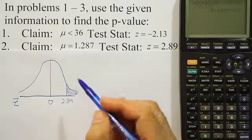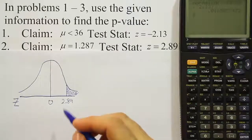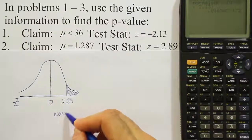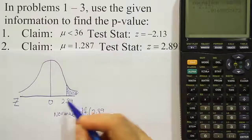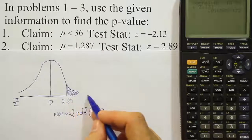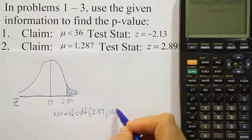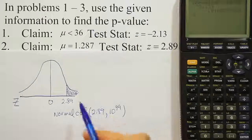So this would be the tail area. And we double it. So we're going to have to give our calculator again the normal CDF. But we're going to start at 2.89 this time. That's the start of the shaded region. And we're going to go up to infinity or 10 to the 99th power for the calculator. It's version of infinity.